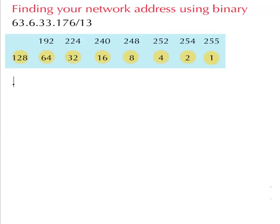Hello everyone, this is Dave Bilson. In this video I'm going to show you how to find your network address using binary. You're normally given an IP address - in this case we've got 63.6.33.176 slash 13 for your mask - and what you'll need to do is work out your subnet mask and then work out your network address.